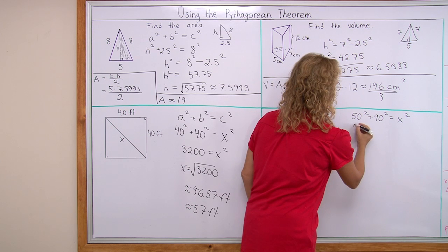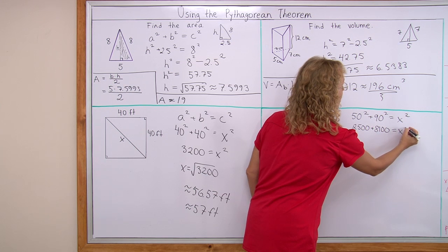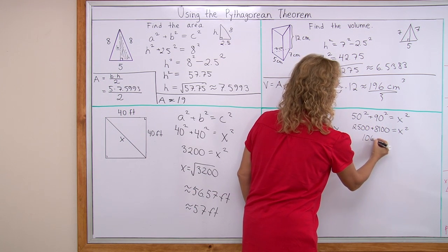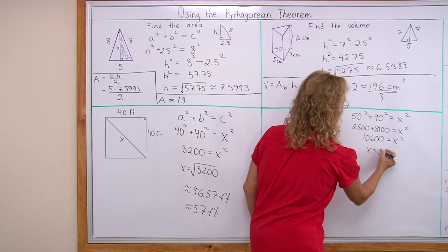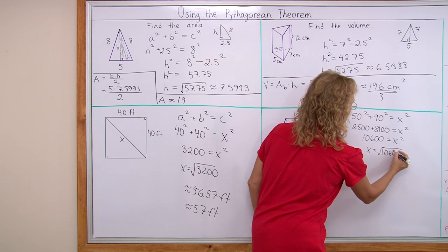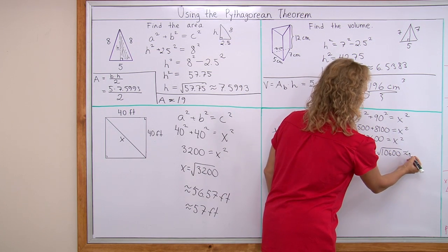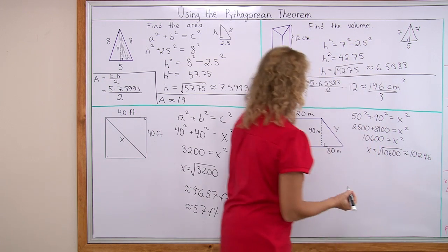And so we get 2500 plus 8100 equals x squared, and so we have 10600 equals x squared, and x is therefore the square root of that, which is approximately 102.96. Okay?